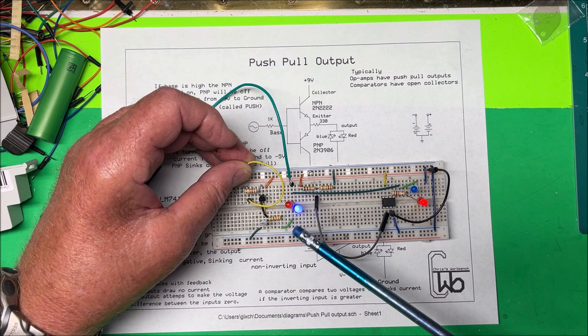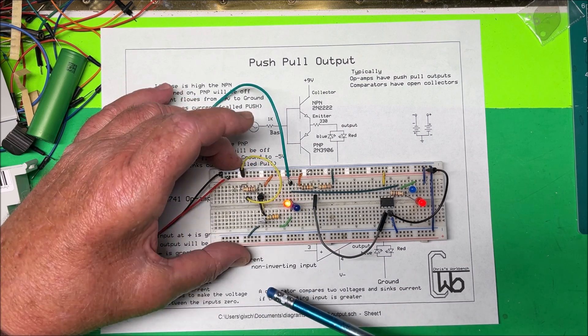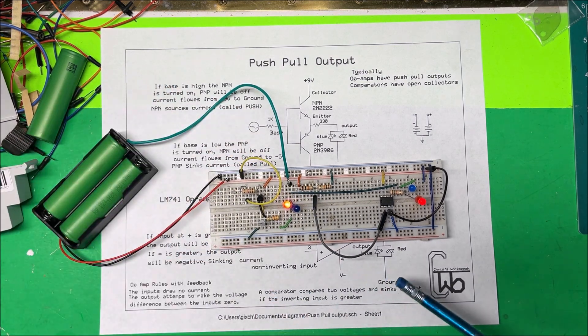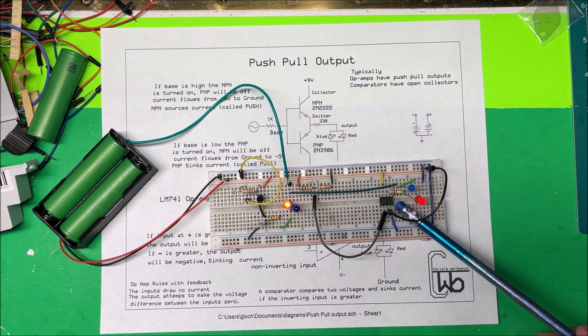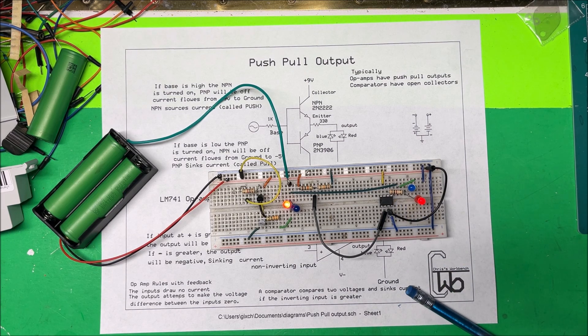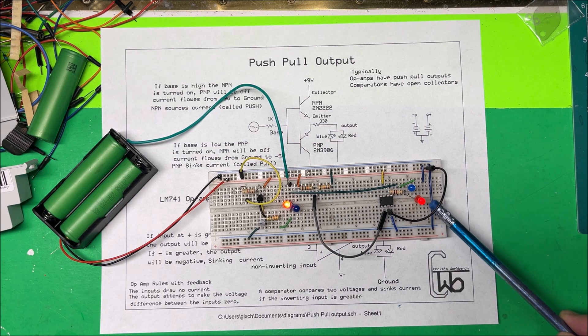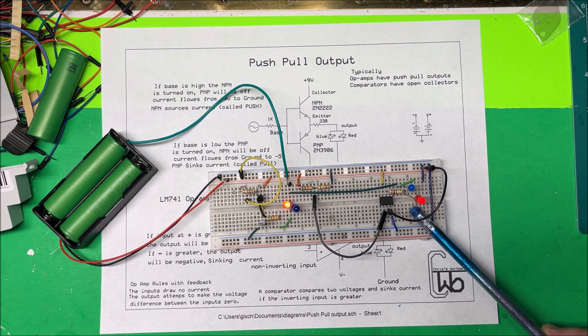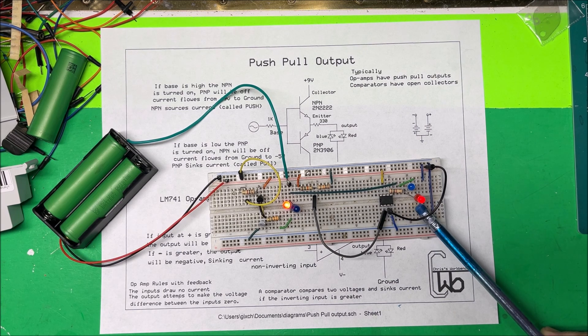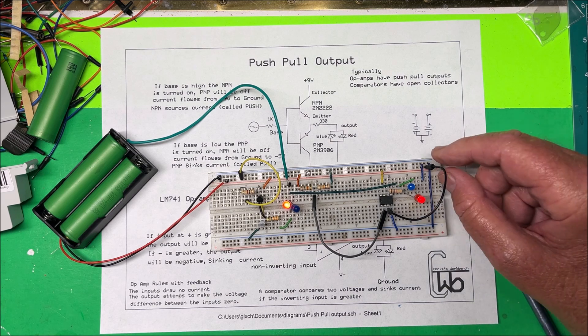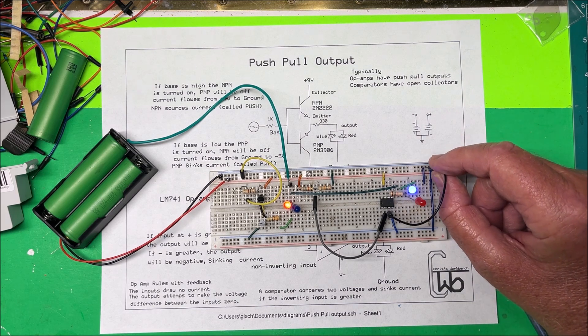So if I go back and forth it just goes from sinking current to sourcing current there. Now here's the LM741 and right now it's sourcing current, the red light's on, I've got the positive over here. And then if I put it in the negative here the blue light's going to come on, I'm going to be sinking current.